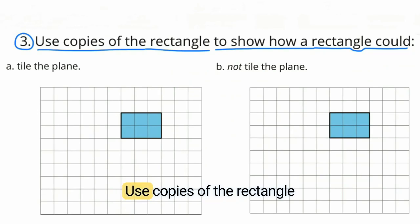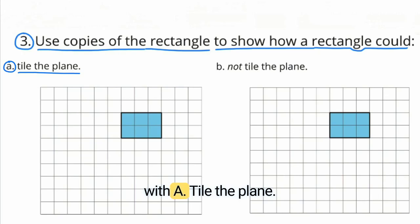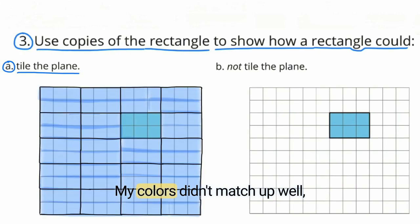Use copies of the rectangle to show how a rectangle could A, tile the plane. Let's go ahead and start with A, tile the plane. My colors didn't match up well, but you can get the idea. When you tile the plane, you tile the entire plane. You don't leave any spaces or any gaps.